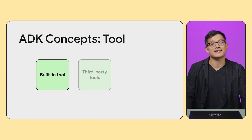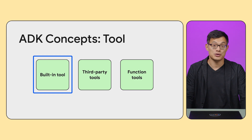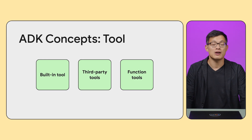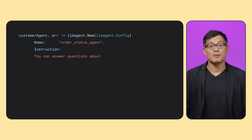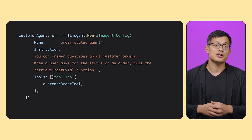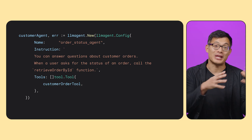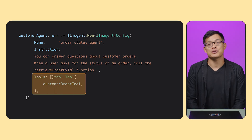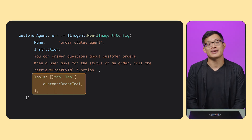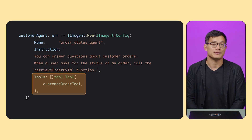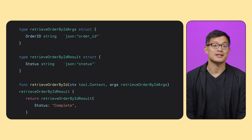Go ADK provides three types of tools for your agents to use: built-in tools like Google Search, third-party tools like the ones provided by MCP servers, or function tools. A function tool essentially wraps arbitrary Go code and makes it available to the agent. If you're building a customer service agent to let customers ask about the status of their order, you can add a function tool in the tools method of your agent definition.